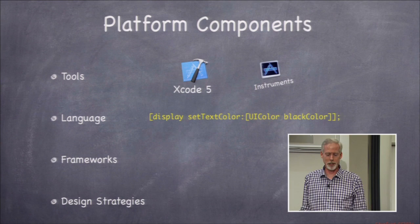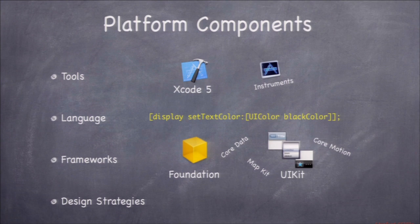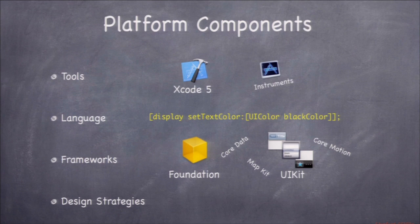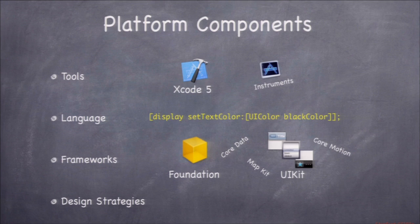Any big system like this groups its objects into libraries — we call them frameworks in iOS. There are dozens of frameworks. The two main ones we'll look at at the beginning of the course are Foundation, where all the Core Services stuff like arrays and dictionaries is, and UIKit, where buttons and sliders are. There are many others like Core Data for object-oriented databases, Core Motion for the gyro and accelerometer, and Map Kit for maps.